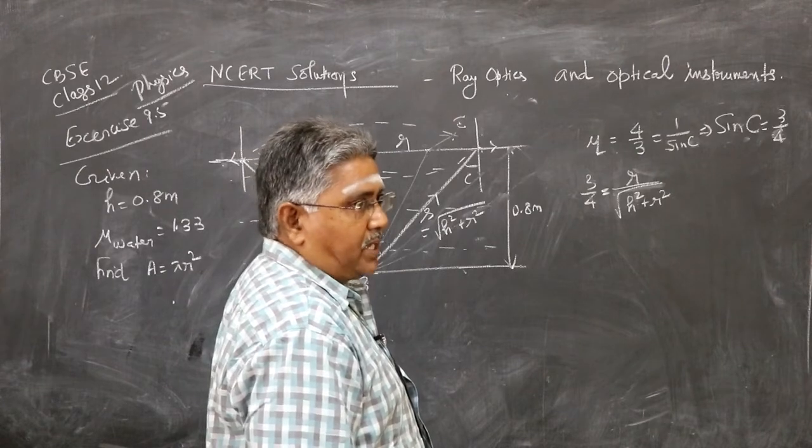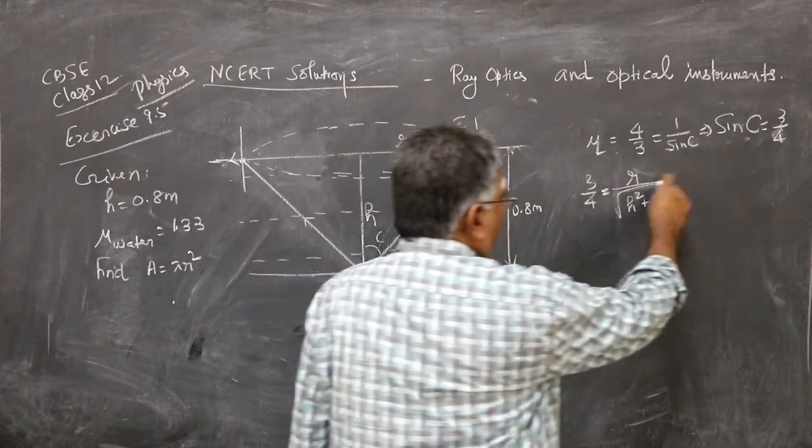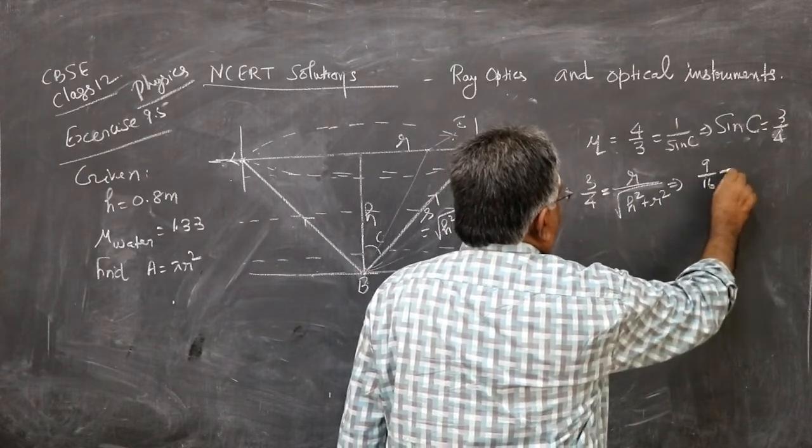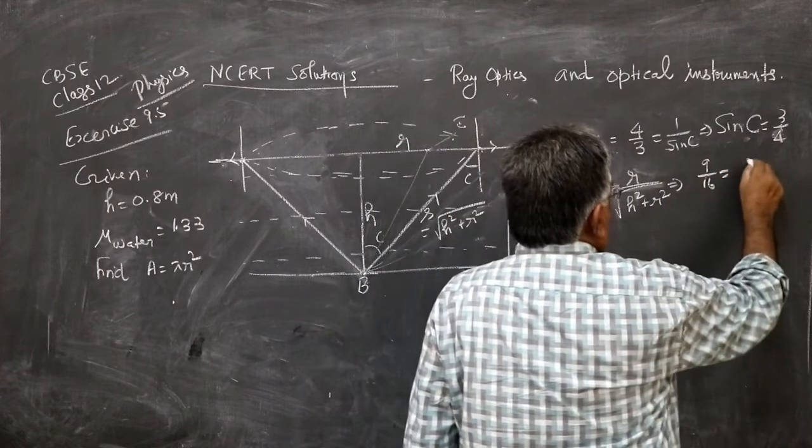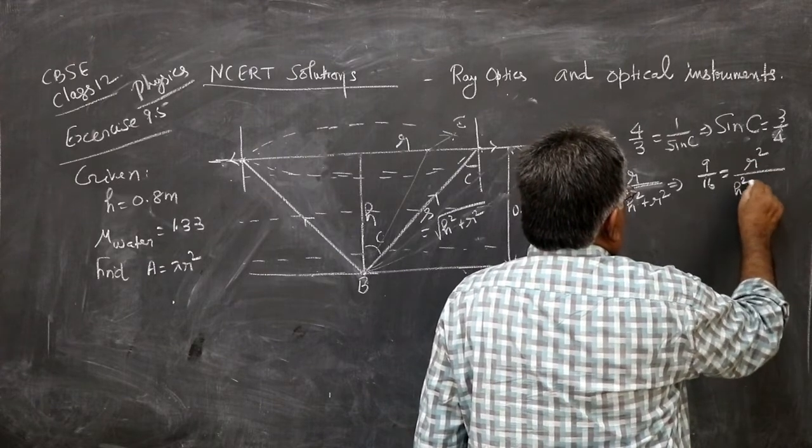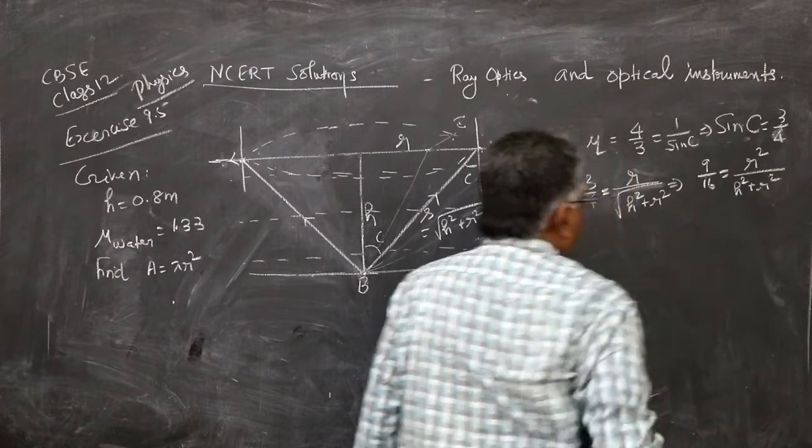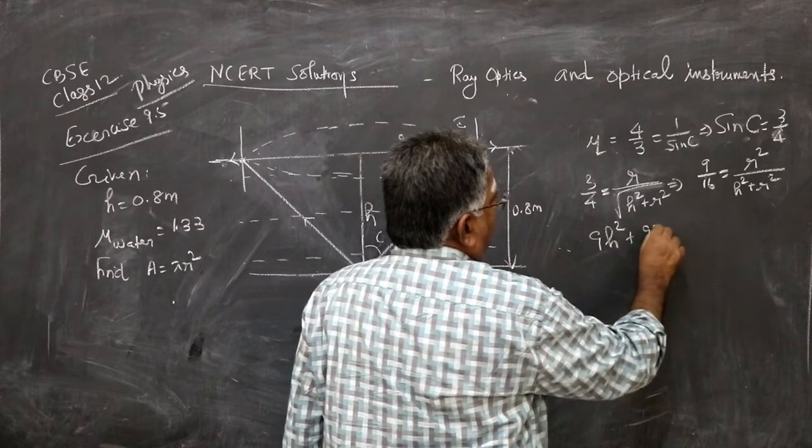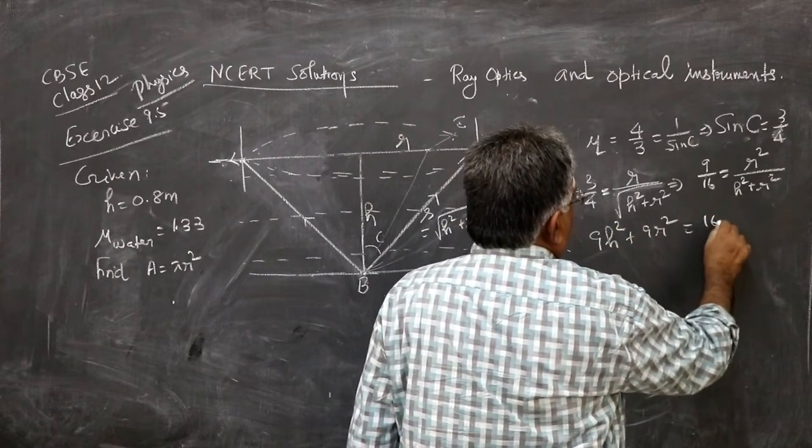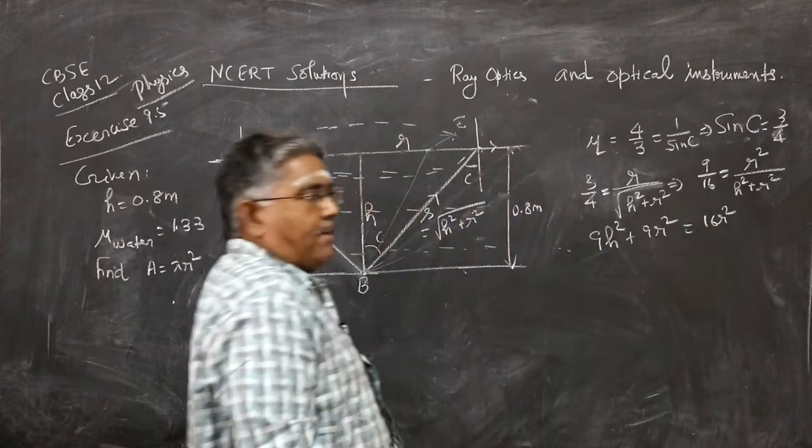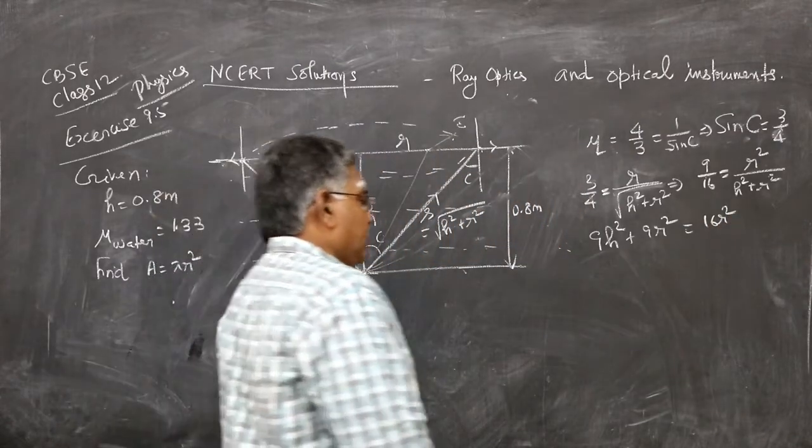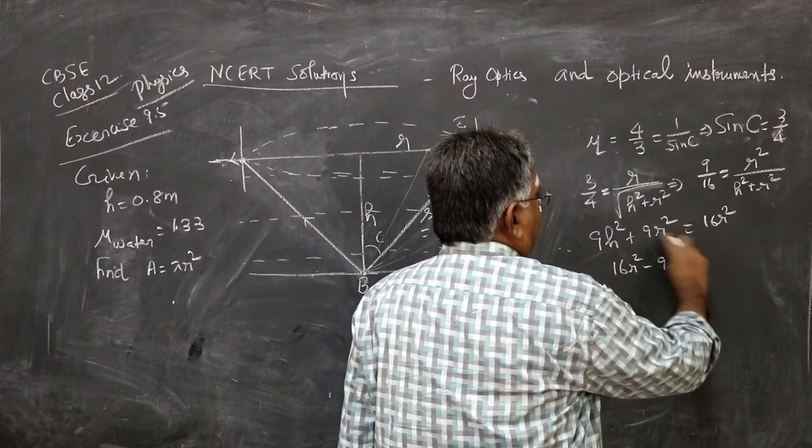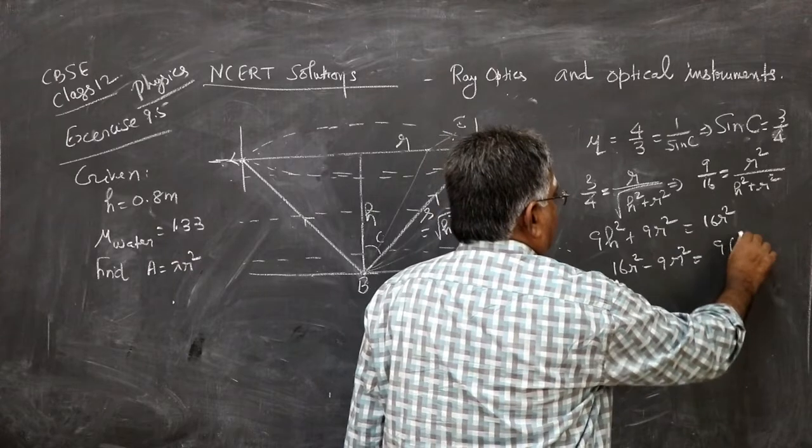Our aim is to find pi R squared. So first square these two terms. You will get 9 by 16 equals R squared by H squared plus R squared. Therefore, 9H squared plus 9R squared equals 16R squared. Cross multiply.